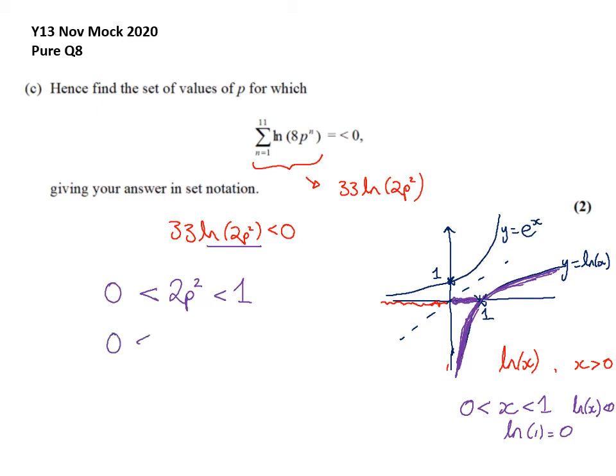So based on that, I can divide by 2. P squared must be less than 1 half. And then I can square root. I'm not going to do a negative square root. It can't go negative. So less than the positive square root of 1 half. So 1 over root 2.